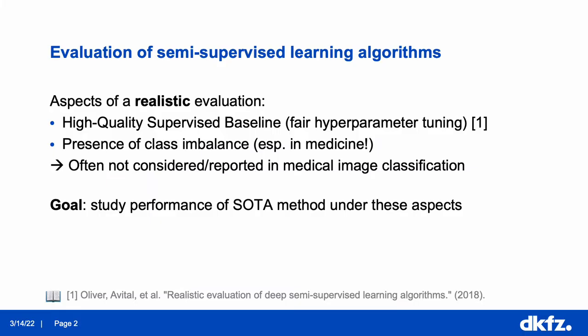In this project we took a look at existing works on semi-supervised learning for medical image classification and noticed that some aspects are often treated with little care. For example, hyperparameter tuning methods are often not reported, which could result in a weak supervised baseline. Moreover, class imbalance is rarely taken into account, although it's ubiquitous in medical applications.